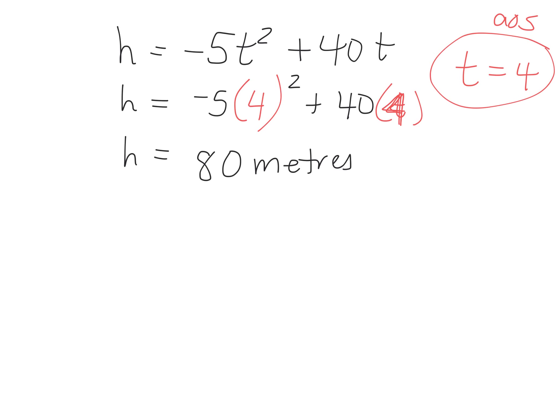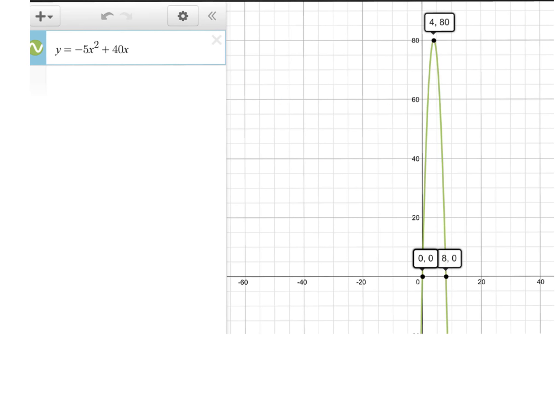So let's check my sketch and see if this makes sense. I just plugged in the original equation into Desmos and we checked our x-intercepts. Time. Rocket was in the air for 8 seconds and it reached a height of 80 meters after 4 seconds.